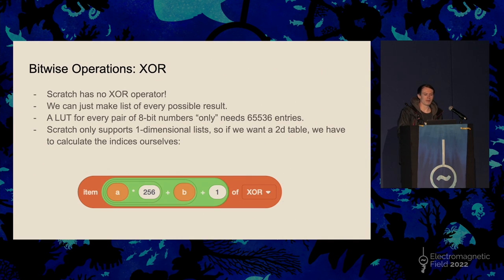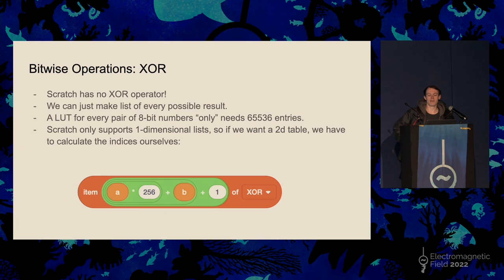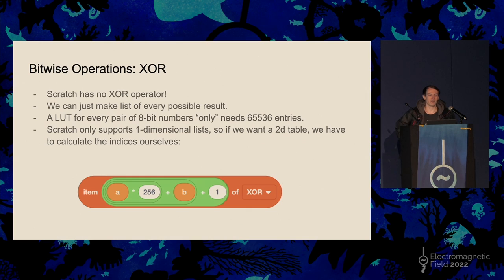The next challenge is bitwise XOR. Scratch has no XOR operator. As a bit of a cheat, we can make a list of every possible result — a lookup table of every pair of 8-bit numbers and what the result is if you XOR them together. The list for 8-bit numbers is 65,000 entries long, so I wrote a Python script to generate that list. Scratch lists are one-dimensional, but we've got a two-dimensional table here, so there's a bit of arithmetic to convert the indexes. Lists start counting at one instead of zero in Scratch, which is a bit annoying.